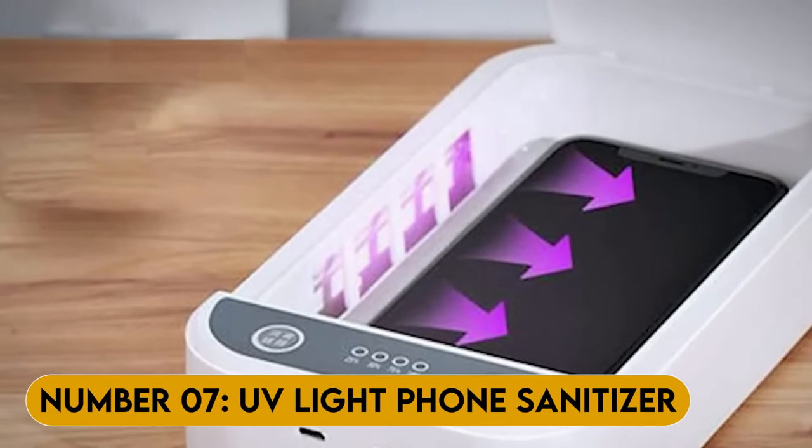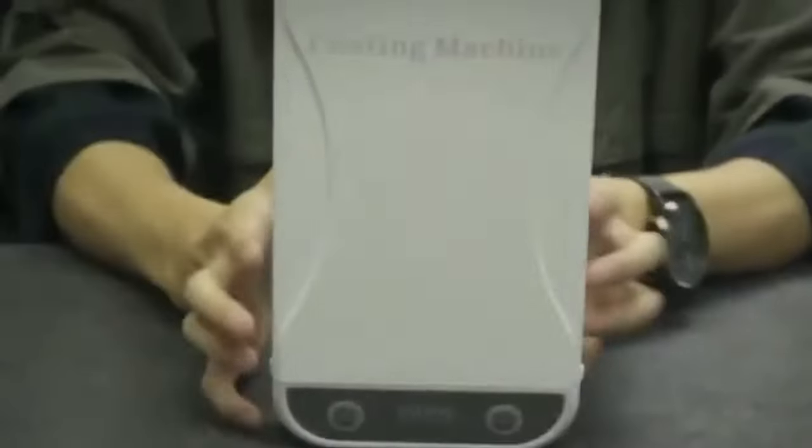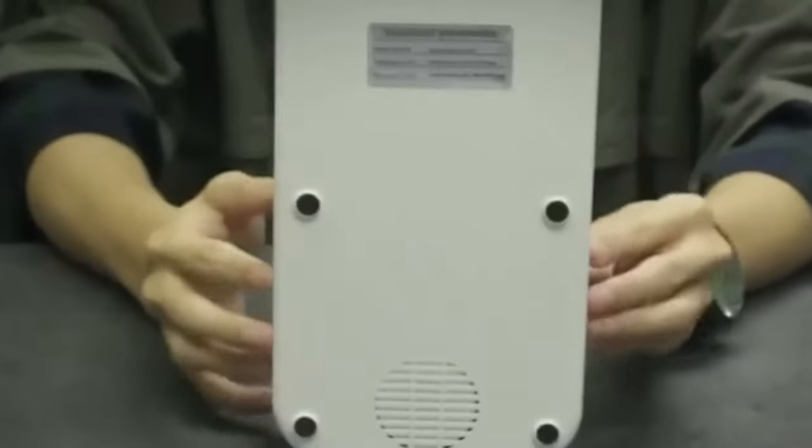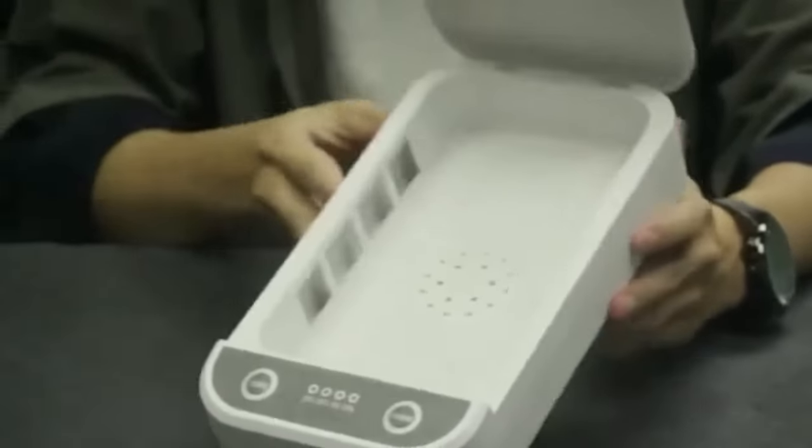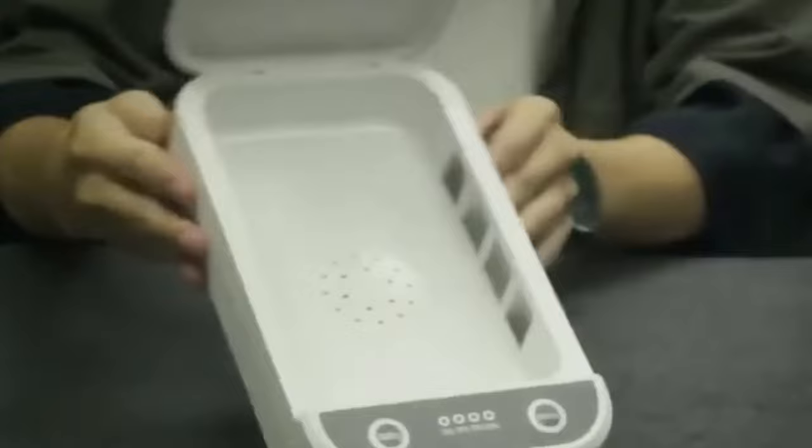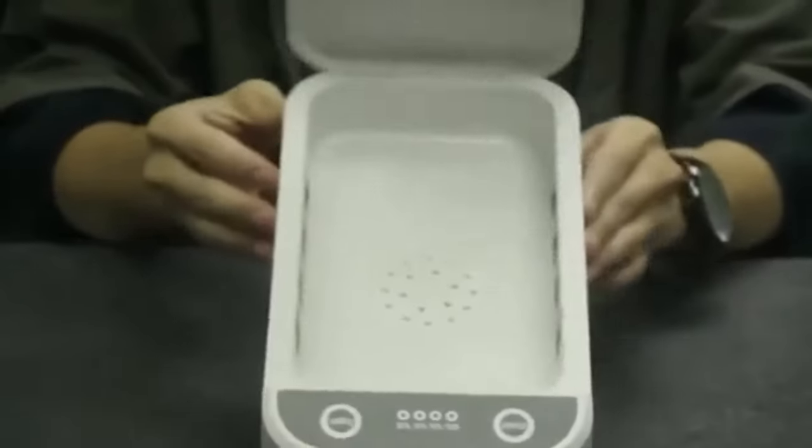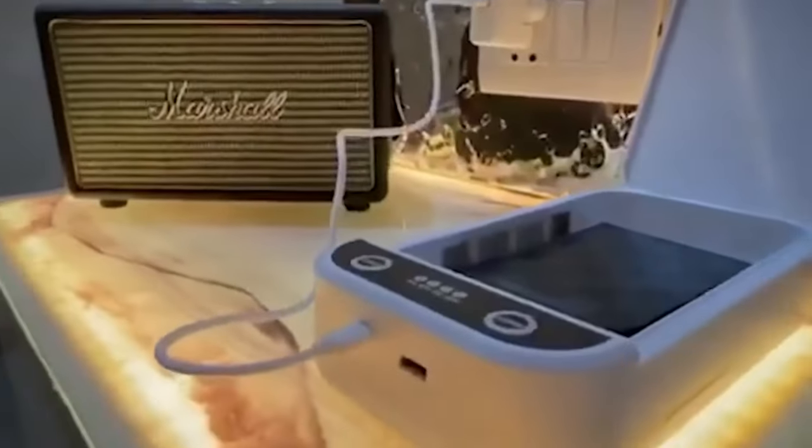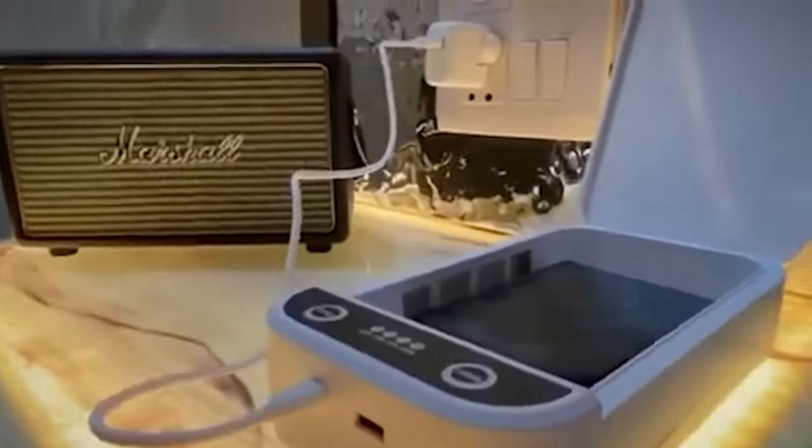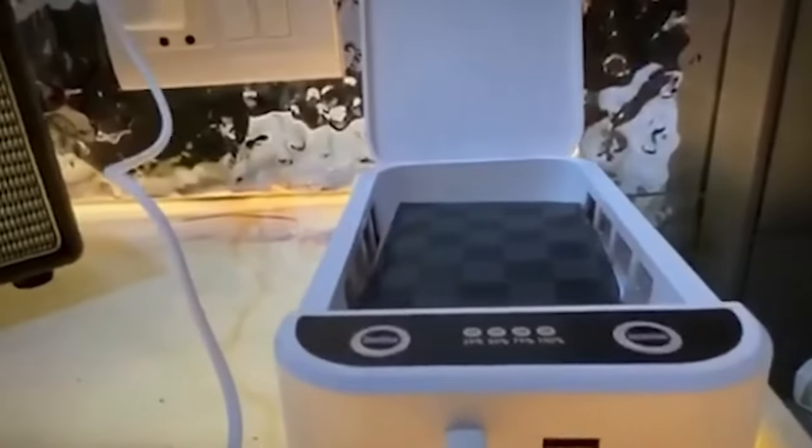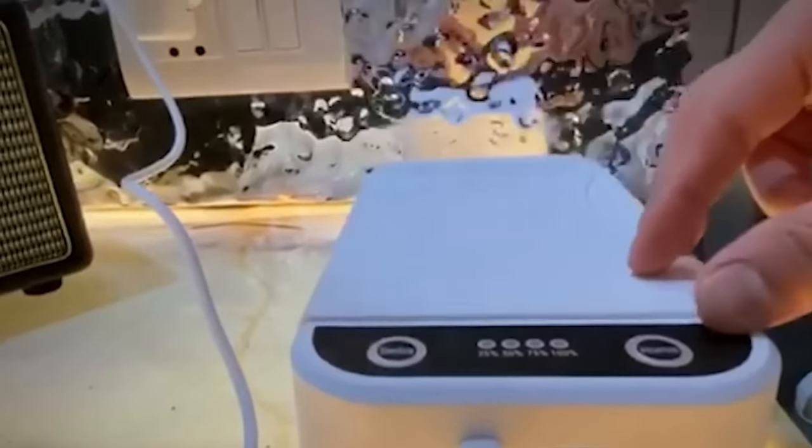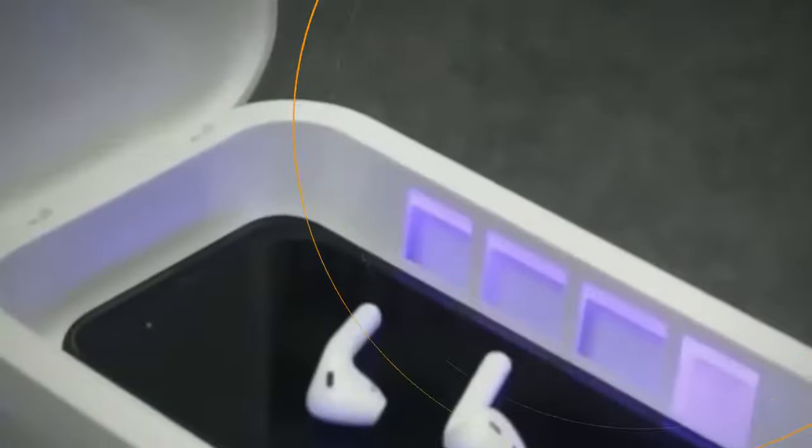Number 7. UV Light Phone Sanitizer. Now, we all know how disgusting our phones can get. We touch them all the time. They're constantly in our hands. And we put them down on all sorts of questionable surfaces. Well, this little device uses UVC light to kill 99.9% of germs and bacteria on your phone in just 5 minutes. It's like a little tanning bed for your phone. But instead of a golden glow, you get a clean and healthy phone.